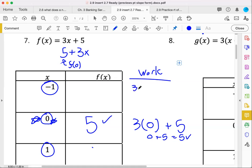What do you think the work would look like when we're plugging in here? Hopefully you're saying that x would be negative 1. 3 times 0 would be negative 3. Negative 3 plus 5 is 2.